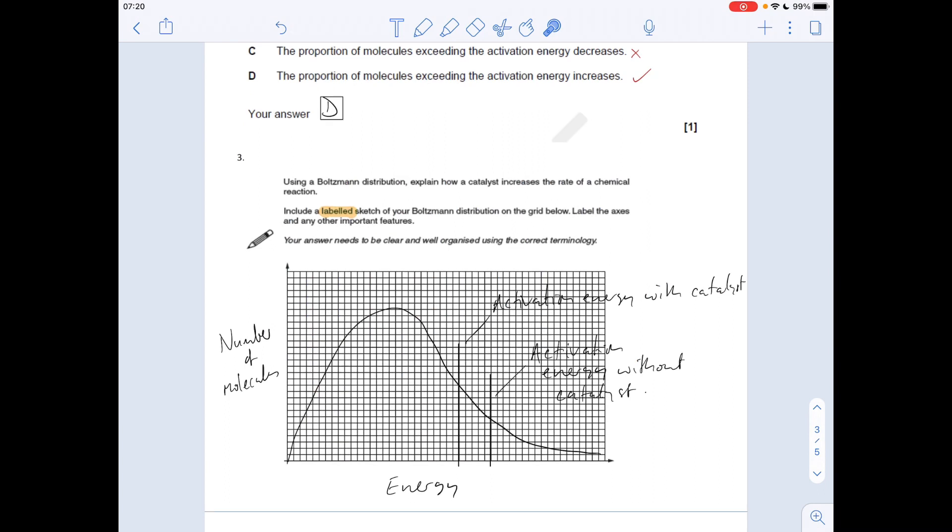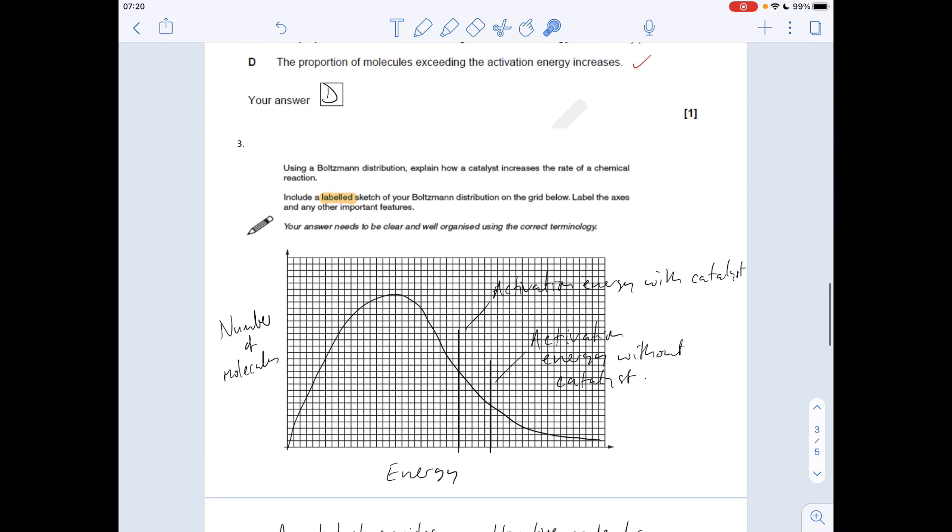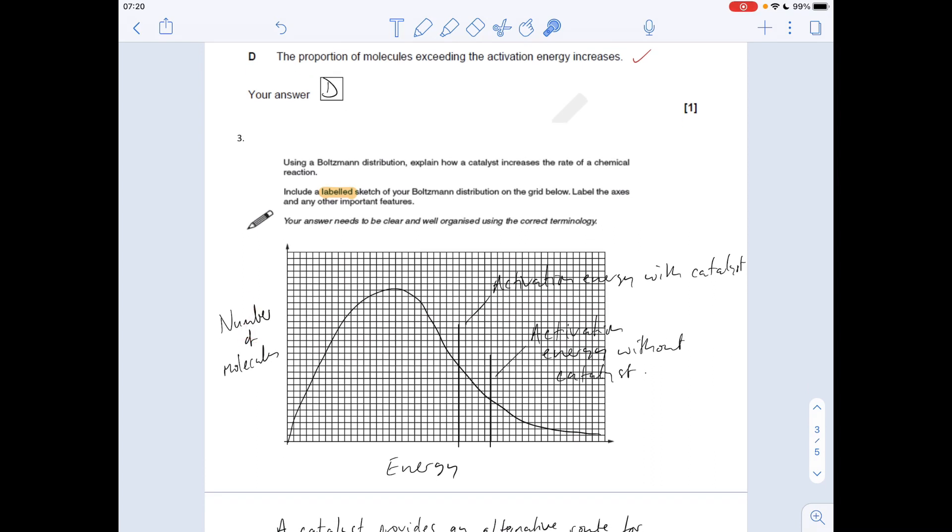Next question: we've got to draw a labeled Boltzmann curve and use it to explain how a catalyst increases the rate of reaction. Got to get our labels correct: number of molecules on the y-axis, energy on the x-axis. The curve must start at the origin. The examiner will be looking there—it's got to start at the origin because no particles have zero energy. It takes that profile, but what you've got to make sure—they're going to be looking there as well—